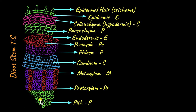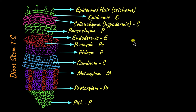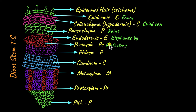The pith also has irregularly shaped cells with a lot of intercellular space. So there you have a rough diagram of the transverse section of a dicot stem. Now let's come to our mnemonic. This is something I came up with — you can create your own. E is for 'every', C is for 'child can', P is for 'paint', E is for 'elephants', B is for 'by', P is for 'perfecting', P is for 'patterns'.